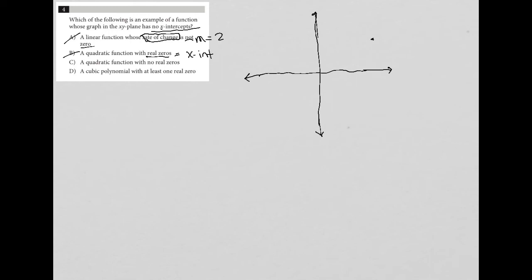Choice C, a quadratic function with no real zeros. Well, now, that's the exact opposite of choice B. So if it has no real zeros, that means it doesn't have any X intercepts. And that's exactly what we're looking for. So there's no need to draw anything to test that out. So choice C must be the correct answer.